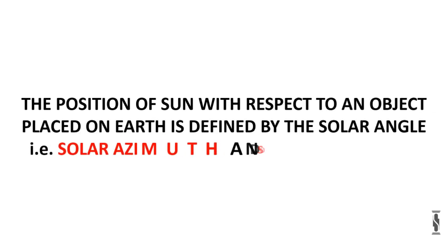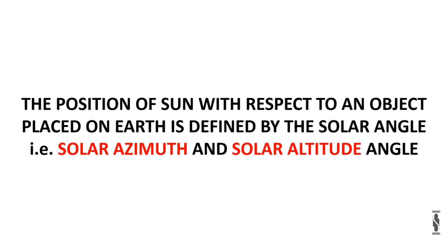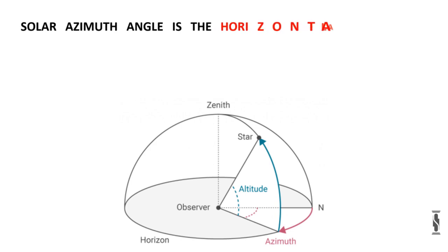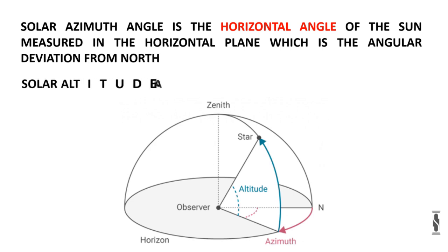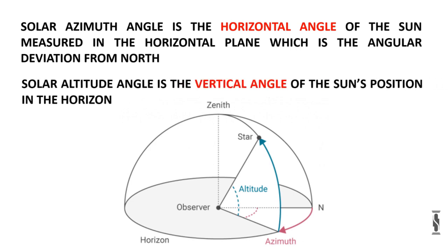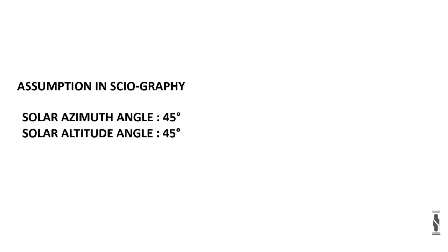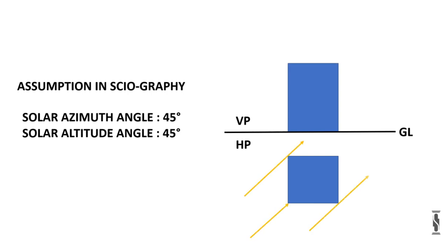The position of the sun with respect to an object placed on the earth surface is defined by the solar angle — that is, solar azimuth angle and solar altitude angle. Solar azimuth angle is the horizontal angle of the sun measured in the horizontal plane, which is the angular deviation from the north. Solar altitude angle is the vertical angle of the sun's position in the horizon. In sciography, we consider solar azimuth angle 45 degrees and solar altitude angle 45 degrees, meaning light rays falling on the object in plan will be at 45 degrees and light rays falling on the object in elevation will also be at 45 degrees.